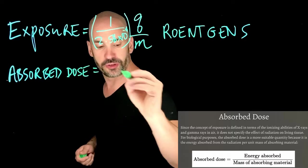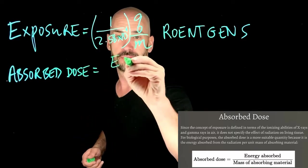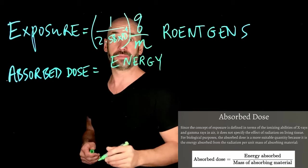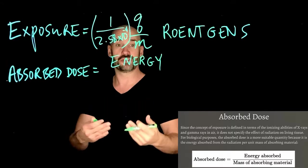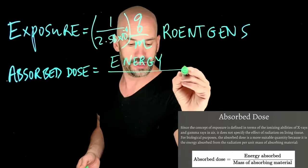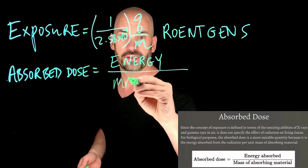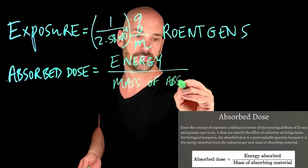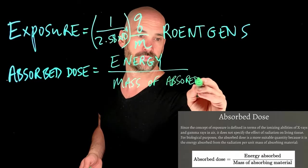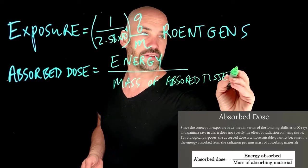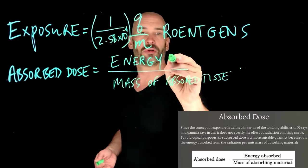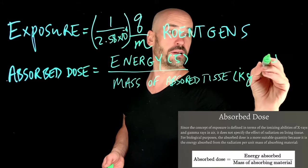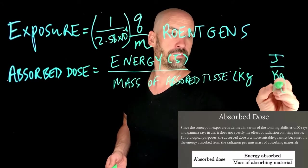The absorbed dose is really how much energy is absorbed by that radiation. If there's radiation that's incident upon living tissue, how much energy is absorbed per mass of absorbed tissue? This is joules and mass is kilograms, so the units of absorbed dose would just be joules per kilogram.